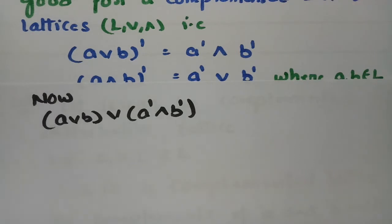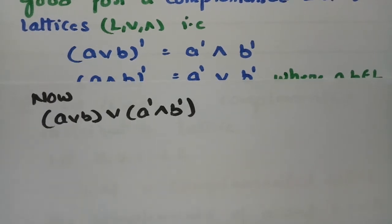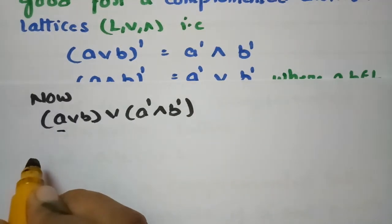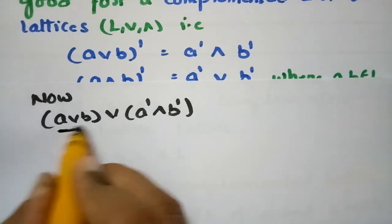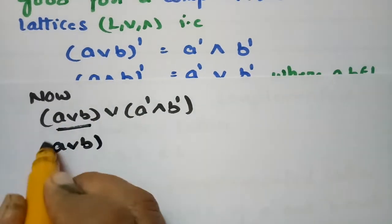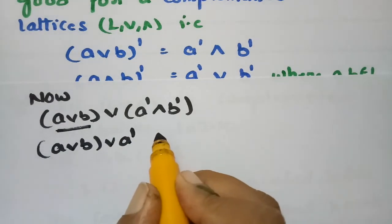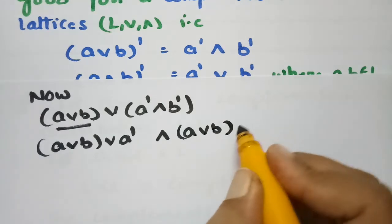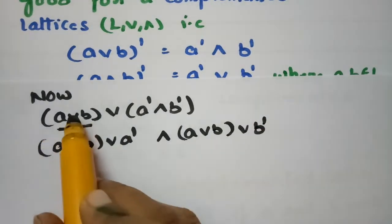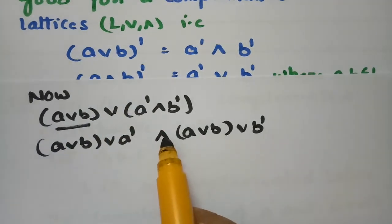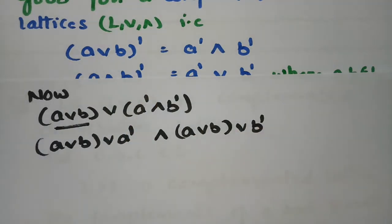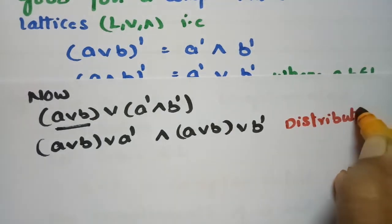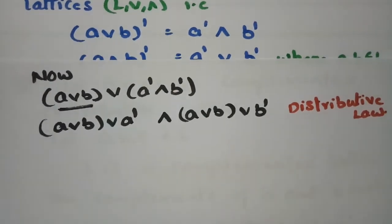Since L is a distributive lattice, consider A∨B∨(A'∧B'). Distributing A∨B over (A'∧B'), we get: (A∨B∨A') ∧ (A∨B∨B'). This step uses the distributive law.